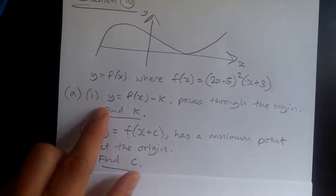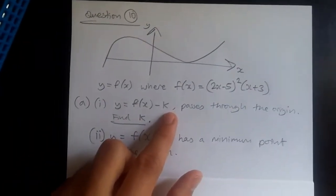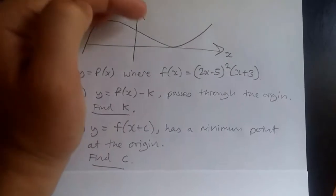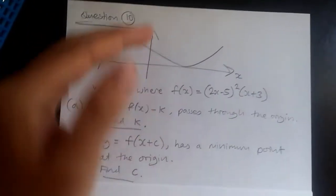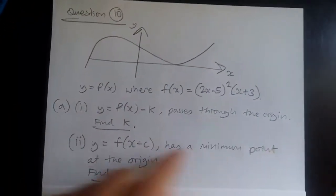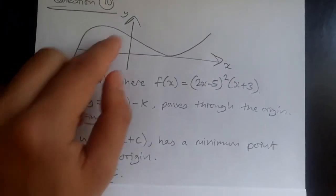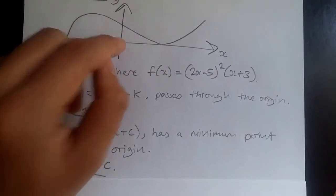We are then given another expression y equals f(x)-k. When something is minus k outside the function, it means we're going to be dropping it down. Assuming k is positive, we know we're going to find the value going downwards and it passes through the origin. So we know that this curve cuts through here. We can see that this shape is now like this cutting through this point.